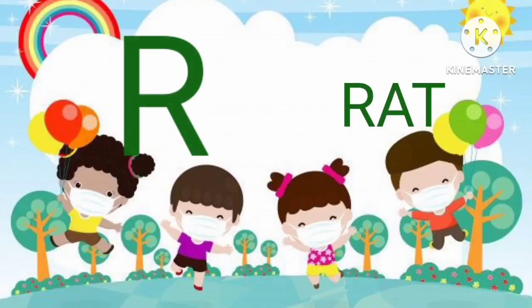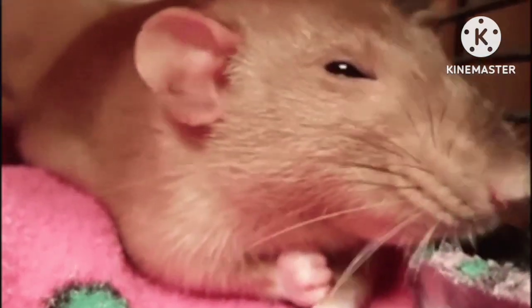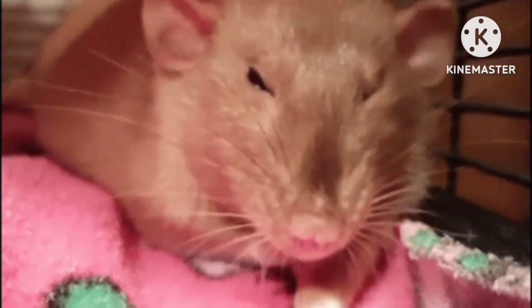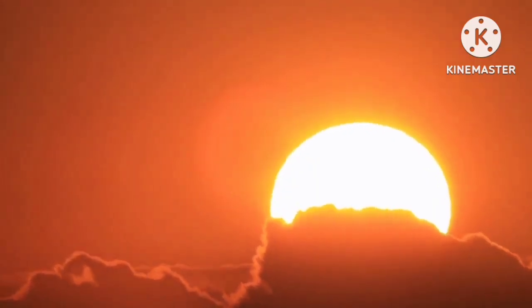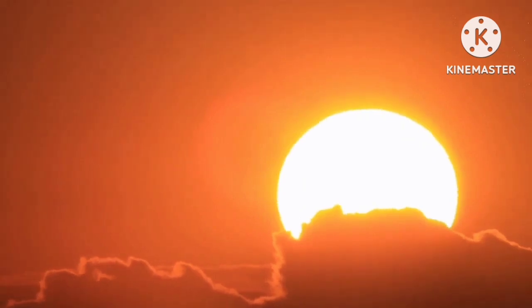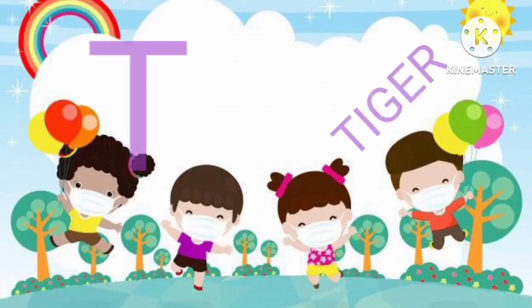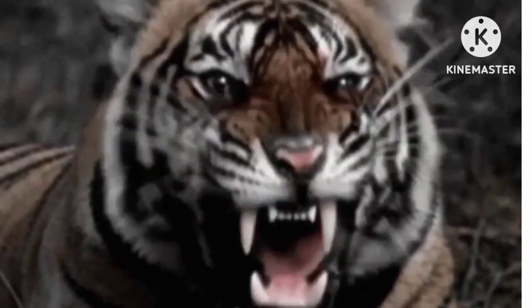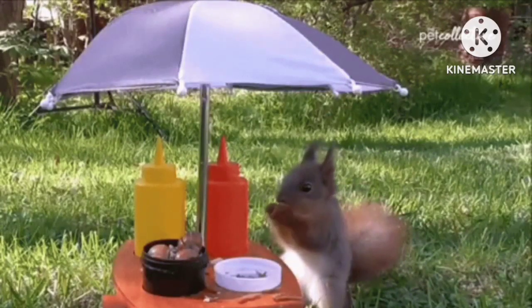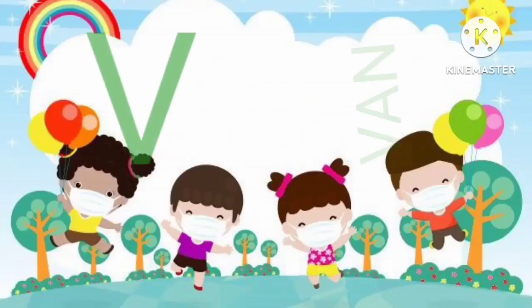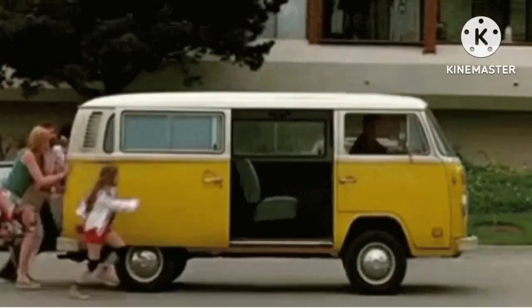R for rat. S for sun. T for tiger. U for umbrella.